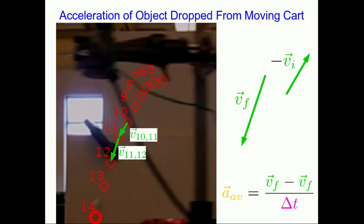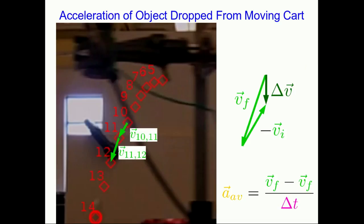Just as before, I'll take the negative of vi and add it to vf, and that gives me my change in velocity vector. It points straight down, and so that means the acceleration at time 11 points straight down. If I repeat that for all of the other times, I find that it's straight down at every time I look at. What's more, I find that those acceleration vectors are all the same size.